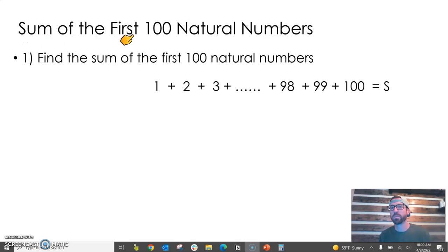To start, let's look at this problem: the sum of the first 100 natural numbers. This problem will lend us some insight on how to add the first 70 terms of a particular sequence. The first 100 natural numbers are 1, 2, 3, and so on, all the way up to 100.